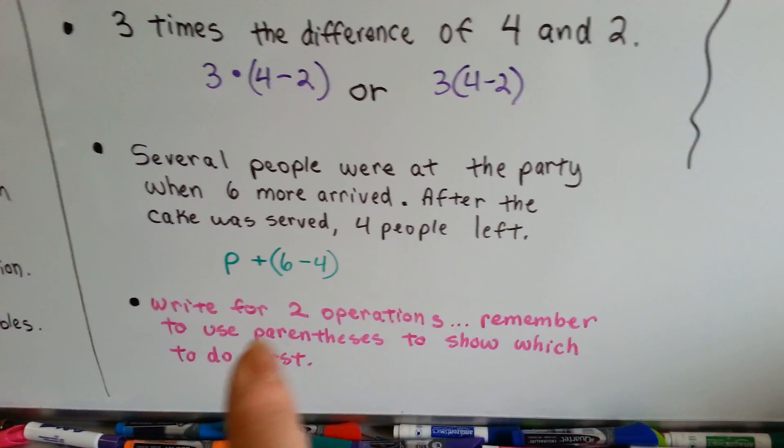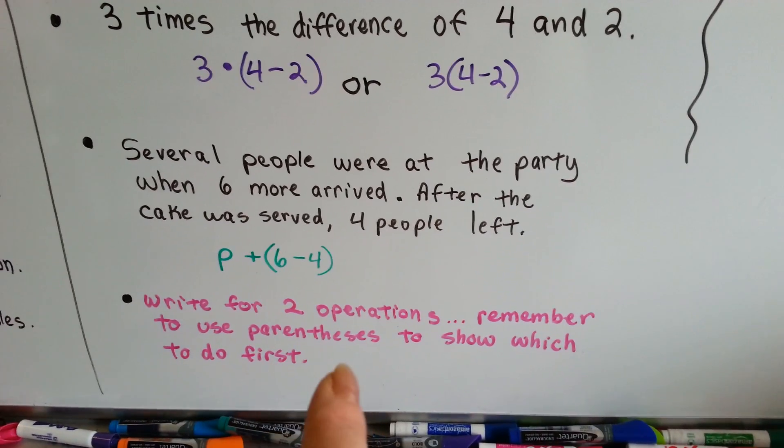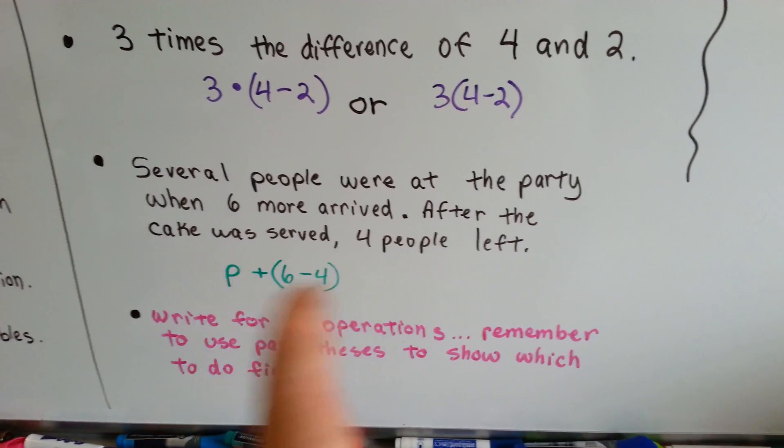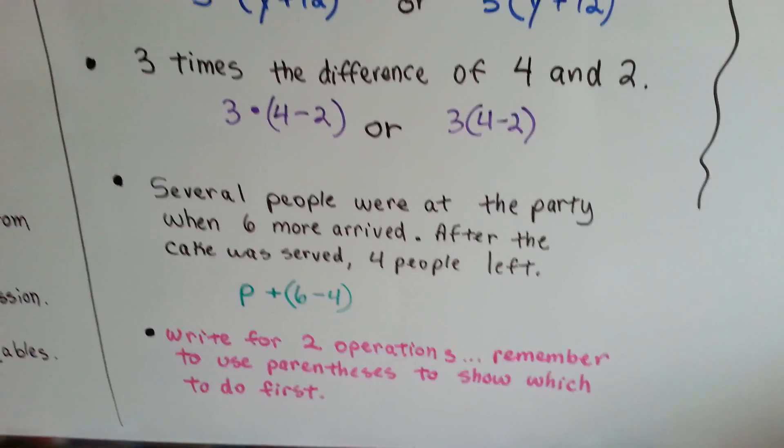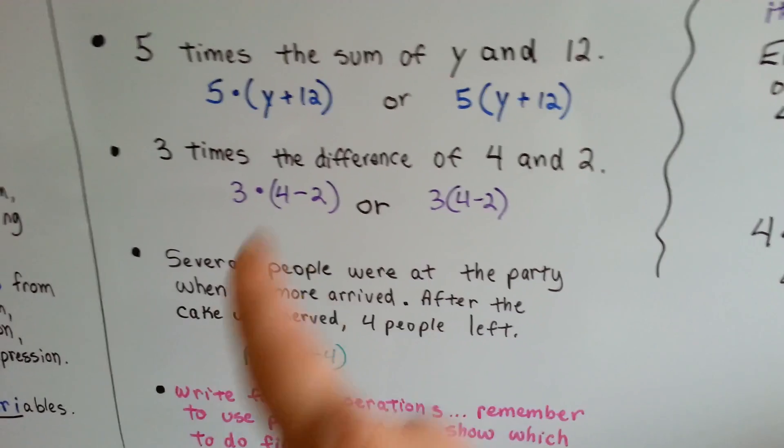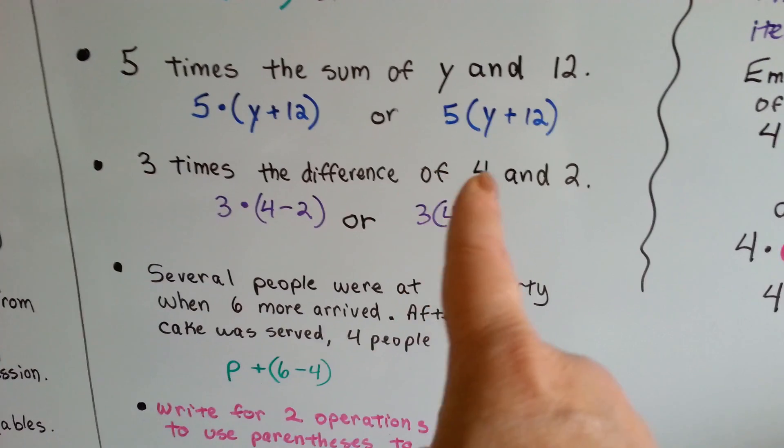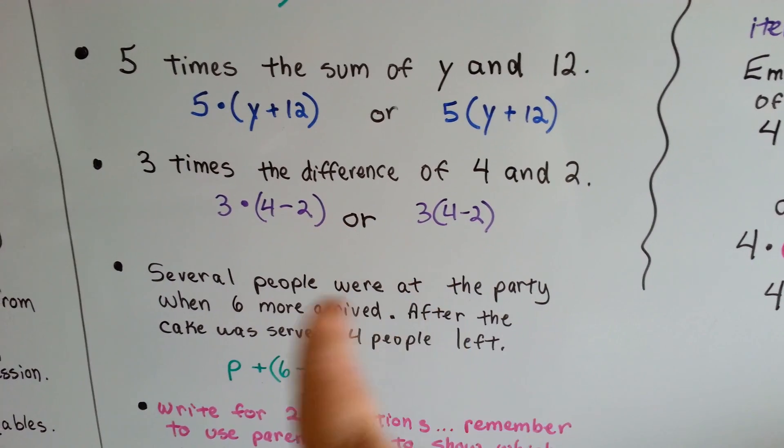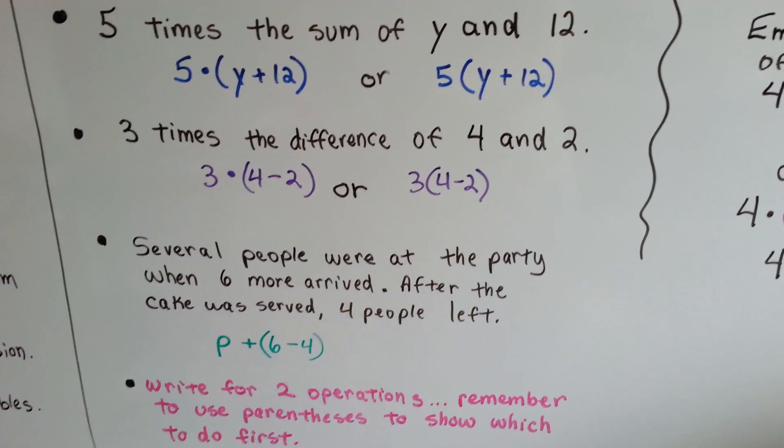So to write for 2 operations, remember to use parentheses to show which to do first, because you wouldn't know which one to do first. You wouldn't want to do 3 times 4 and then take away 2. It would be a different answer.